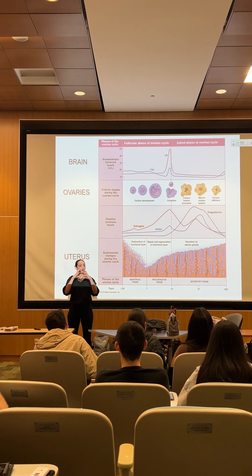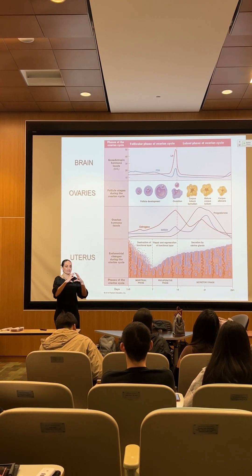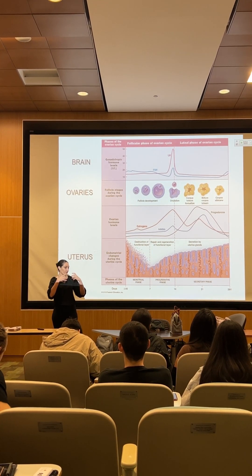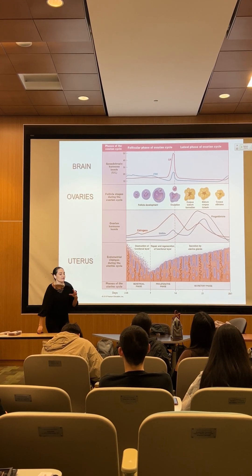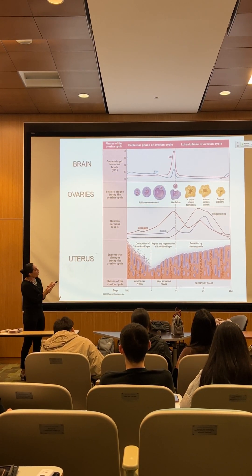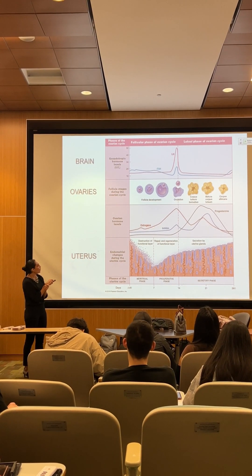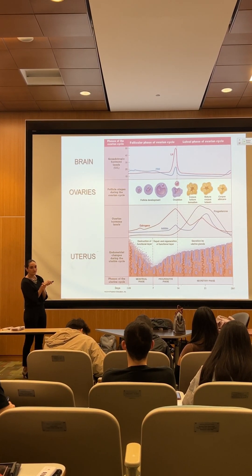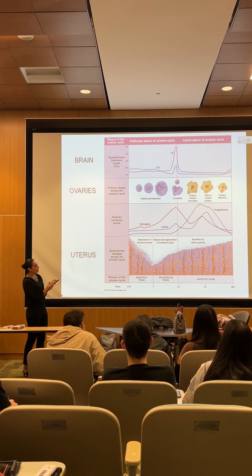As the egg is maturing, the follicular cells are proliferating — imagine a little cushion protecting the maturing egg inside. These follicular cells are proliferating because the egg is maturing, so you have more and more follicular cells. It turns out that these follicular cells release estrogen, and as the follicle grows, you have more and more estrogen being dumped into the bloodstream.